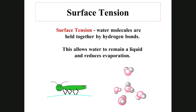Surface tension explains why insects can walk on water — they spread their legs out to disperse their weight so no one point has enough force to break the hydrogen bonds. Water molecules are held together by hydrogen bonds, which allows water to remain liquid and reduces evaporation. Since each water molecule has four hydrogen bonds, it's harder for water to escape into the atmosphere, and the insect's dispersed weight can't break all those bonds.